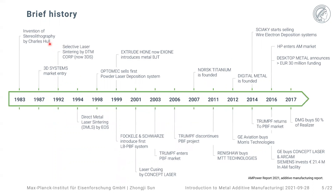This picture shows the historical development of AM. At the very beginning, the first parts built by AM were actually polymers using stereolithography. Then gradually, the major metal AM players came to be — such as Optomec, Concept Laser, and Trumpf. Quite a lot of them originated in Germany, which gives Germany a very unique advantage for working and researching in metal AM.